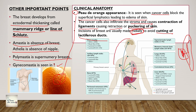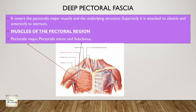If breast cancer is untreated, the sites which are mainly affected are the brain, lungs, and liver. Coming to the deep pectoral fascia - the deep pectoral fascia covers the pectoralis major muscle and underlying structures. Superiorly it is attached to the clavicle, anteriorly to the sternum and the muscles of the pectoral region. Coming to the muscles of the pectoral region, there are three main muscles: pectoralis major, pectoralis minor, and subclavius, with serratus anterior as another important muscle.